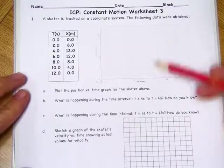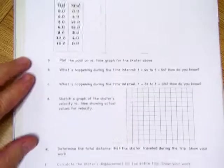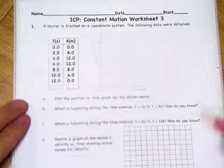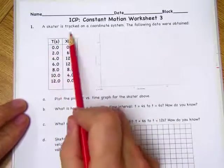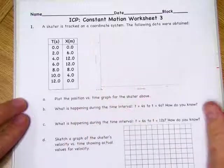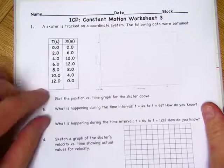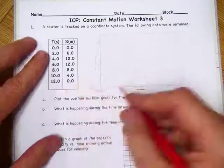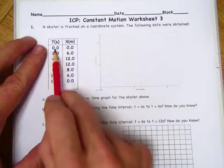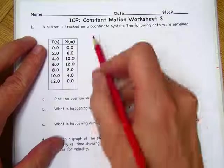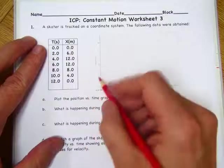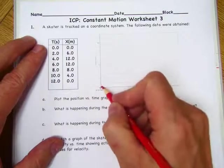Okay, so the front page is just one big long problem with a lot of parts to it. It says the skater is tracked on a coordinate system, so a graph, the following data were obtained. Okay, so we're just going to go ahead and plot the data. Time zero, the position was zero, so it started at position zero.